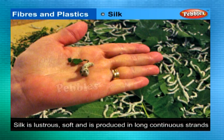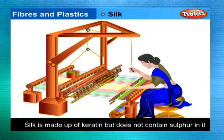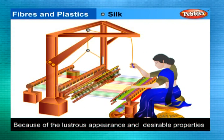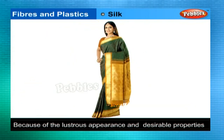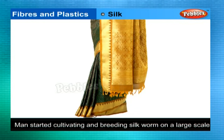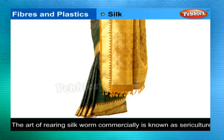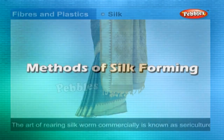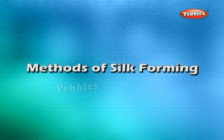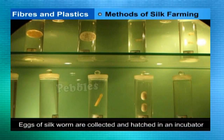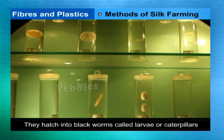Silk comes from the cocoon of the silkworm. Silkworms feed on mulberry leaves. Silk is lustrous, soft, strong, hard-wearing, and is produced in long continuous strands. It is made up of keratin but does not contain sulfur. Because of its lustrous appearance and desirable properties, man started cultivating and breeding silkworms on a large scale. This art of rearing silkworms on a commercial scale is known as sericulture.